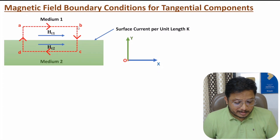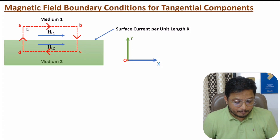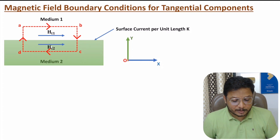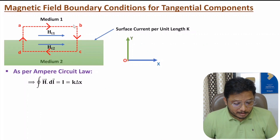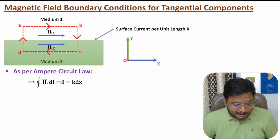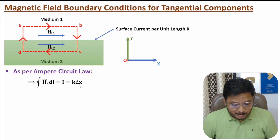To identify magnetic field boundary conditions for the tangential component, I will apply line integration of magnetic field intensity over a closed loop varying from a→b→c→d→a. By applying Ampere's circuit law in this loop, we can identify the relation between HT1 and HT2. Ampere's circuit law states that the line integration of magnetic field intensity equals the current enclosed by the given loop, which is K times Δx (since the surface is along the x-direction).